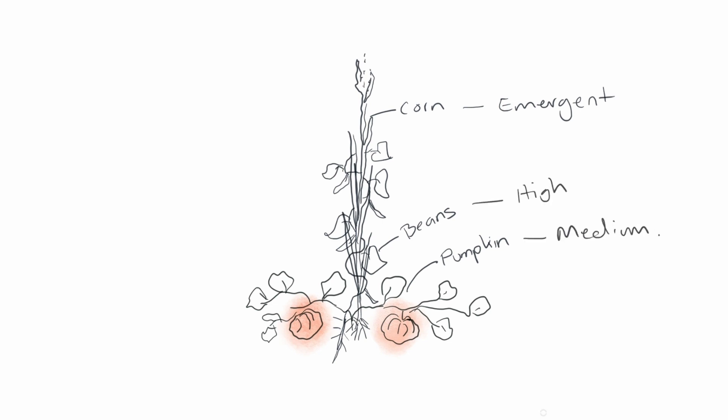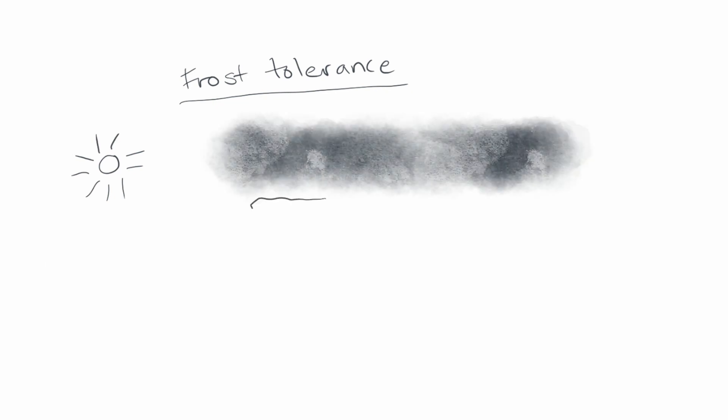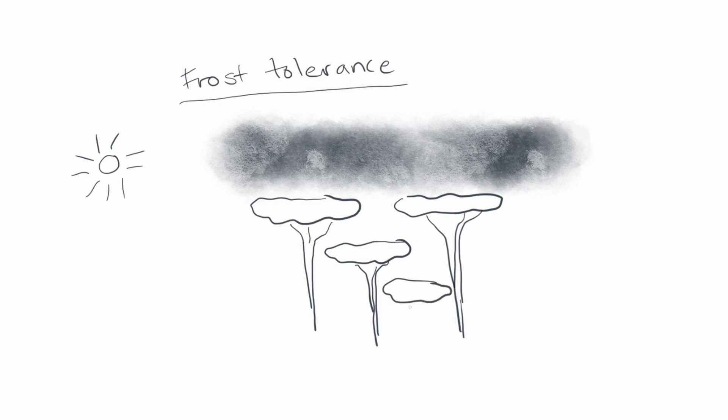Another category we want to go through here is frost tolerance. So much like we covered with the sunlight, we want to also observe the degree of frost that a plant can tolerate. When we understand this, we can put it into its appropriate strata in relation to frost as well, where we have the emergent canopy as the most frost tolerant, offering protection to the lower canopies that have decreasing tolerance to frost. Keeping in mind here that we also want to make room for the amount of sun that the plant requires as well.